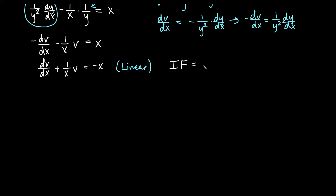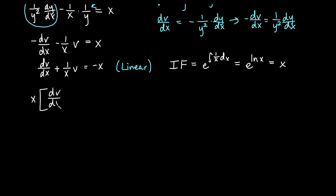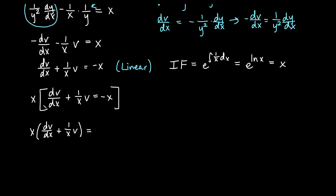Now let's find our integrating factor. The integrating factor will be e to the integral of the function of x, which is one over x dx. The integral of one over x dx is ln(x), so we get e to the ln(x), which equals x. We multiply the entire equation by the integrating factor x: x times dv/dx plus one over x times v equals negative x. The left-hand side becomes a product rule, so we don't distribute it — it becomes the derivative of v times x.